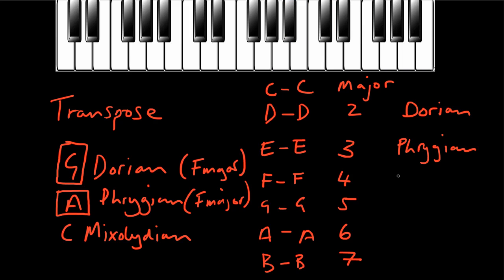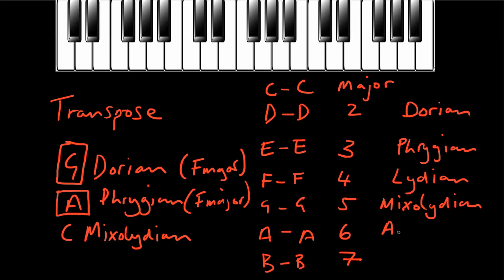This relationship also works for all of the other modes. Lydian is playing the notes of C major but starting on the fourth scale degree, an F. Mixolydian is the same but starting on the fifth scale degree, using the notes of C major but starting on the fifth. And Aeolian is the sixth.